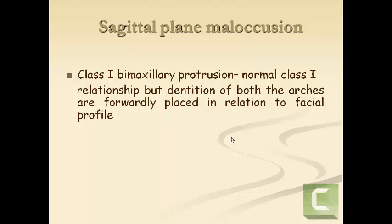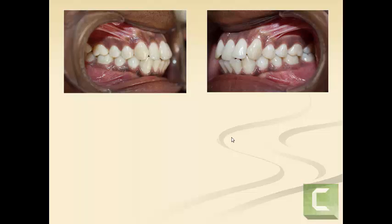One very common type of malocclusion seen in class 1 is class 1 bimaxillary protrusion. Here you have a normal class 1 relationship with usually a well-aligned dentition. When you look at the dentition, it will look almost normal. But the dentition of both arches is forwardly placed in relation to the facial profile. For example, in this case the dentition looks fairly normal with a class 1 molar relationship and good interdigitation.